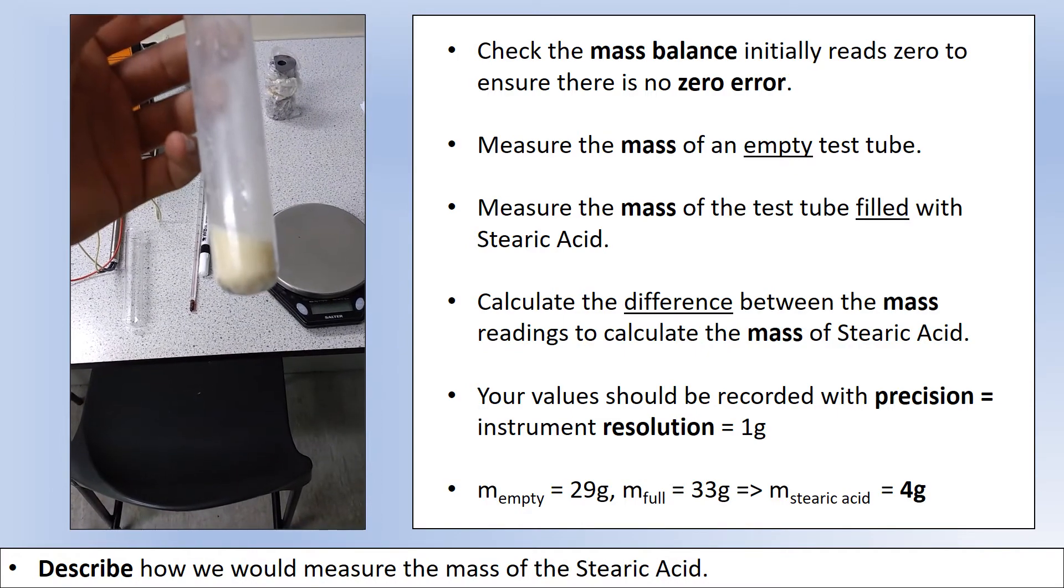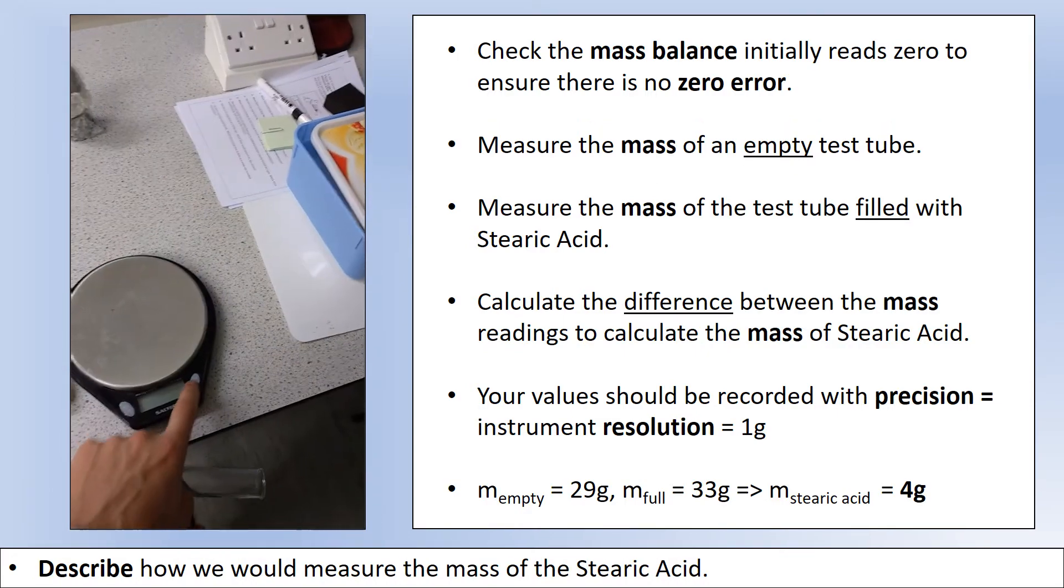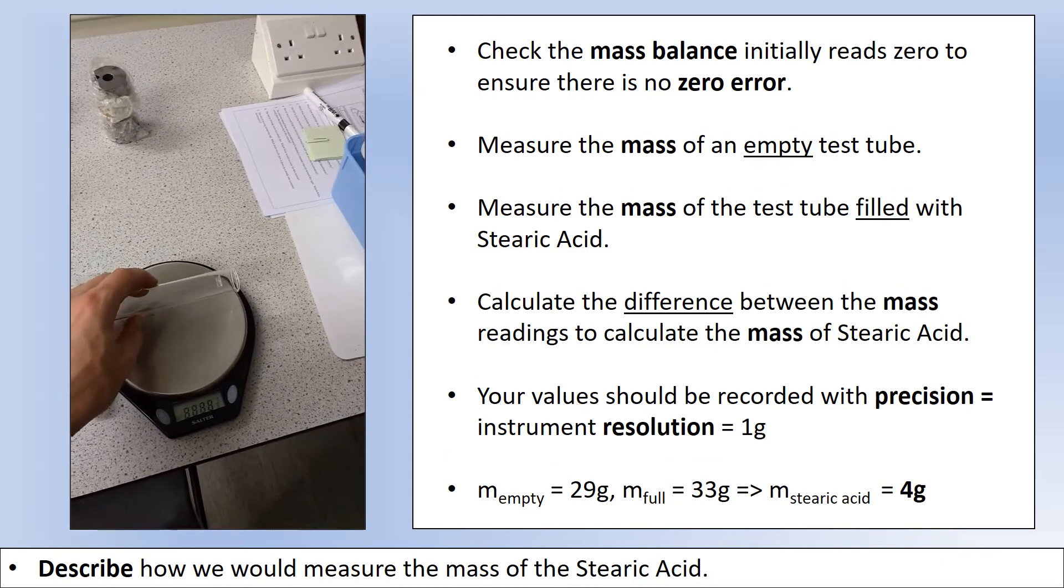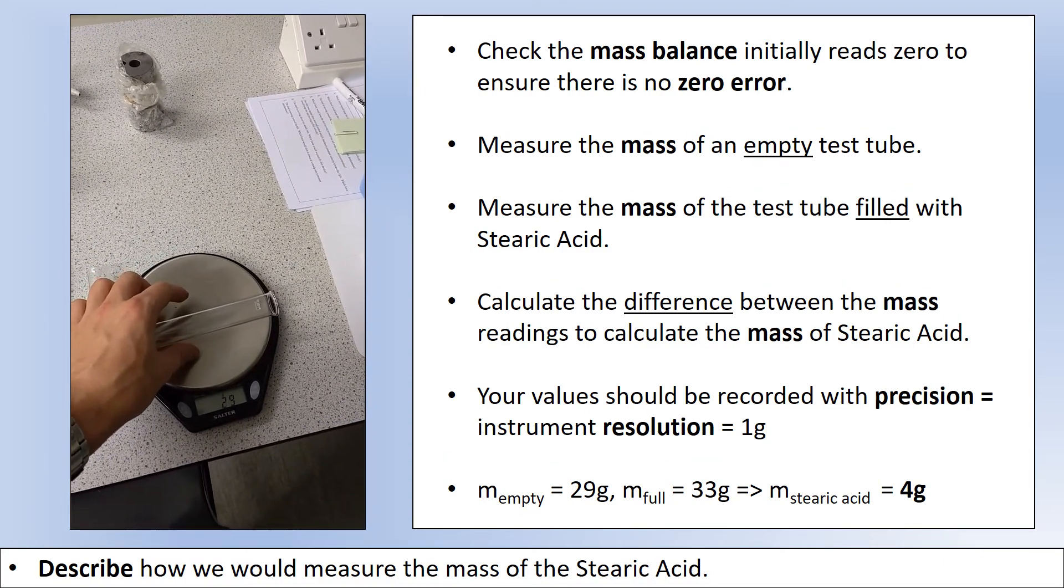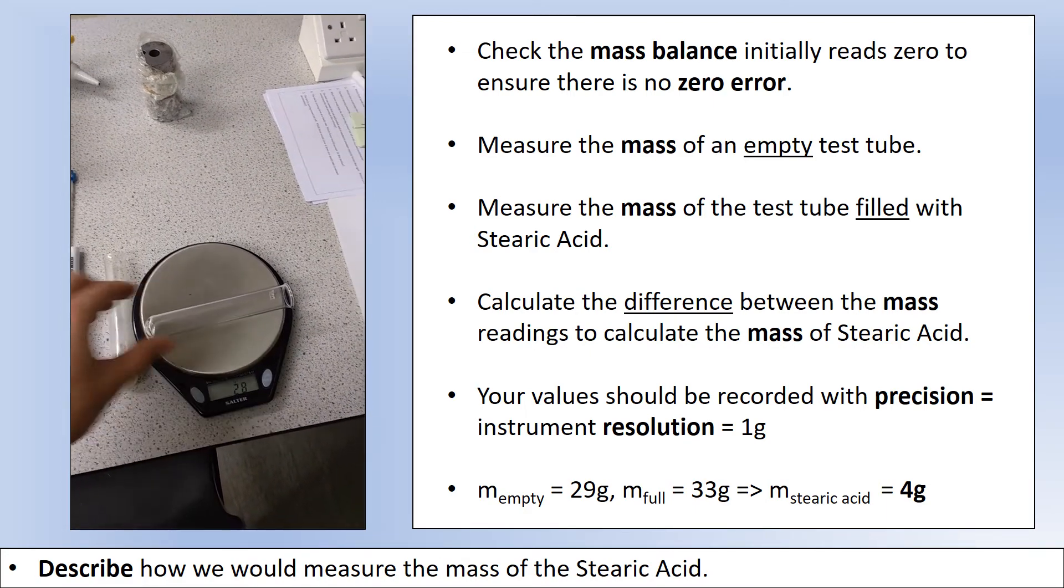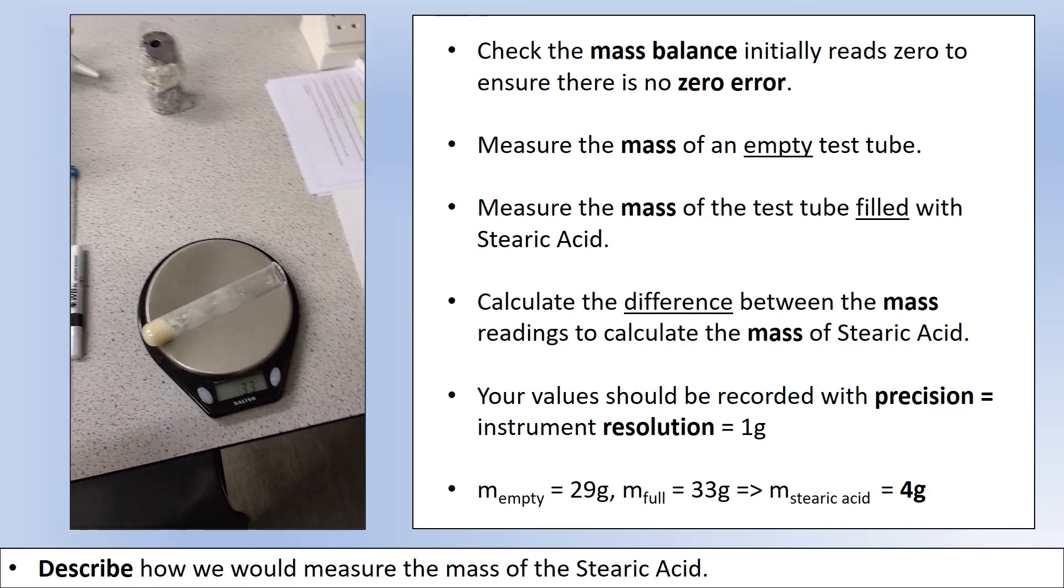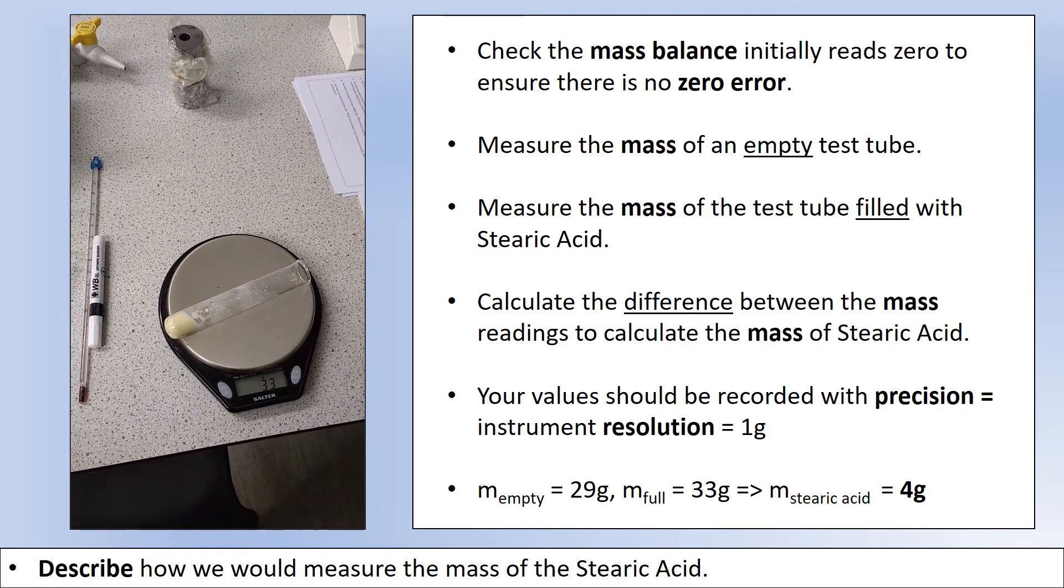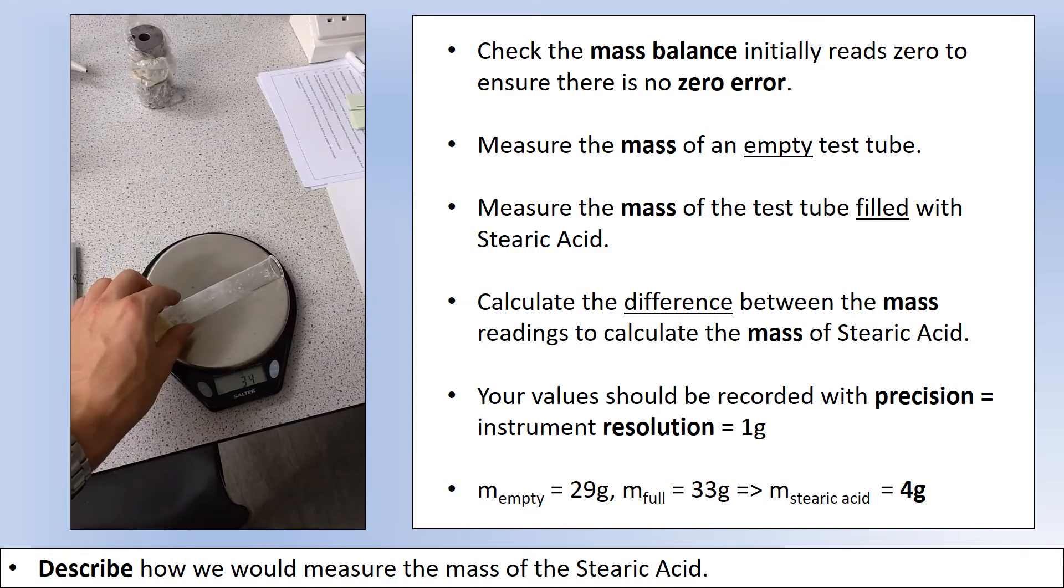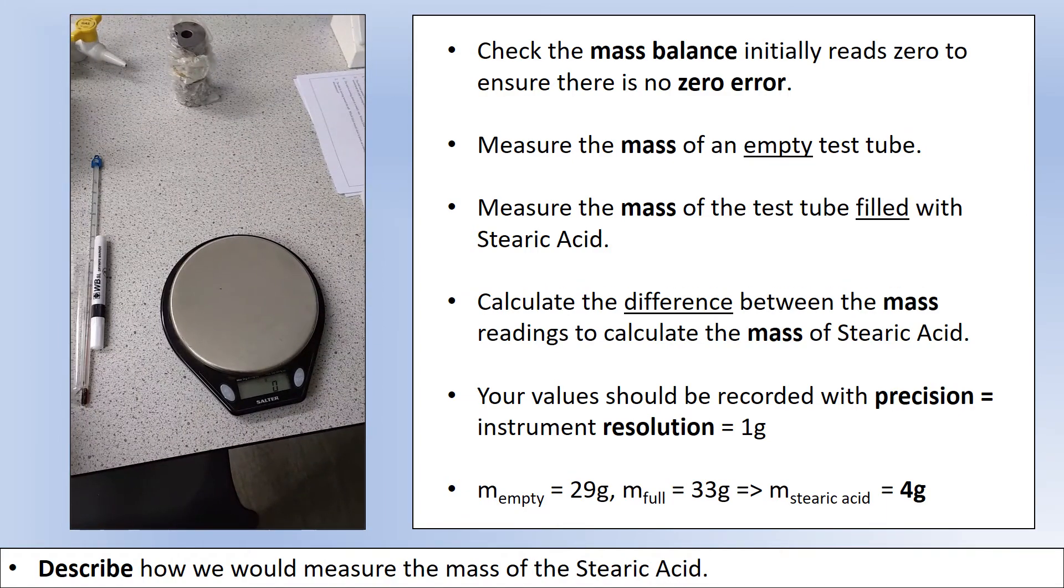What you actually do is you measure the mass of the two combined and you measure the mass of an empty test tube. As usual, check there's no zero error in your mass balance before you take measurements. We've got a measurement for the empty test tube, we've got a measurement for the full test tube, and finding the difference between those would give us the mass of the stearic acid contained within the test tube.